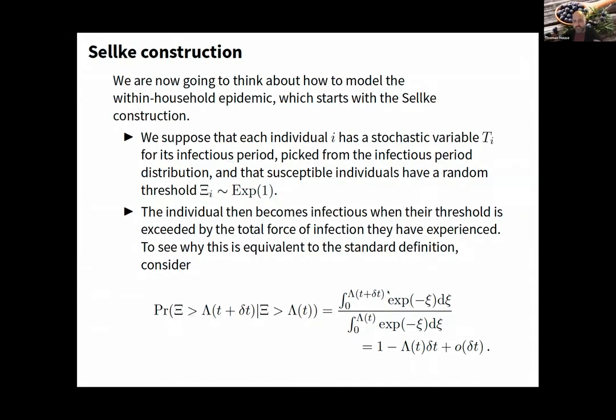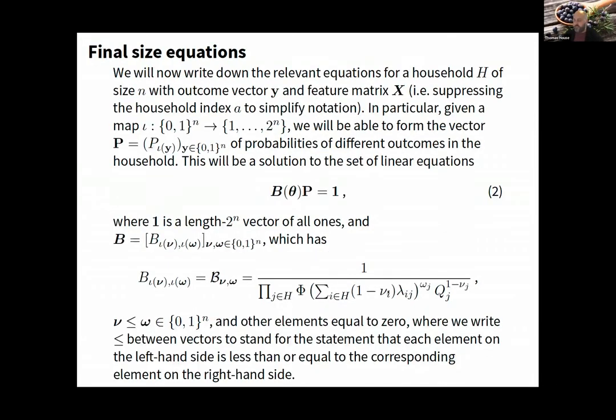We give each individual an arbitrarily distributed stochastic variable for its infectious period, then each person picks from an exponential distribution their resistance to infection. We reduce that resistance deterministically according to infection amount.